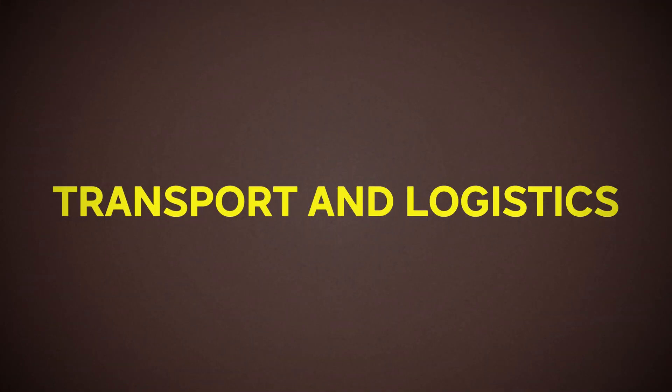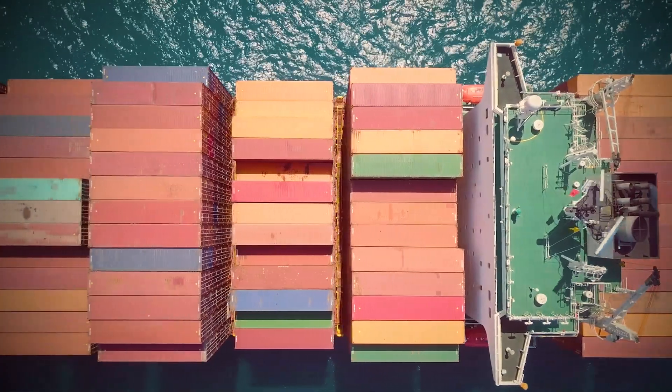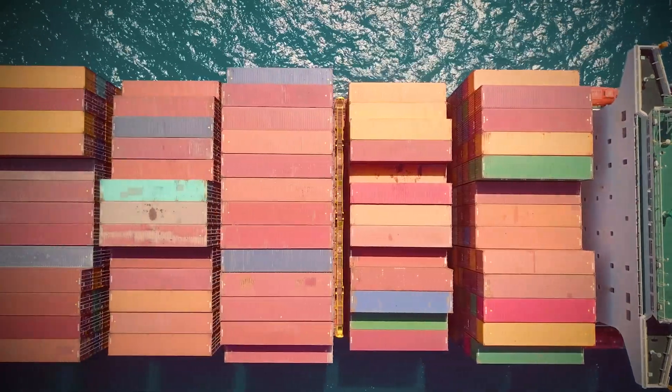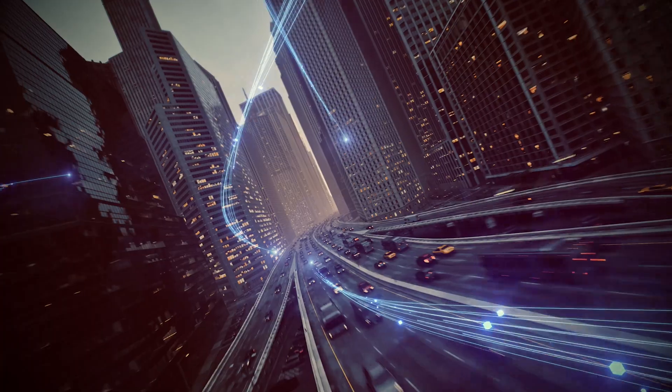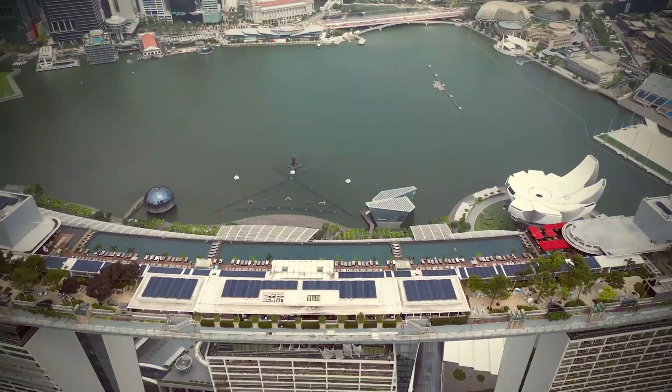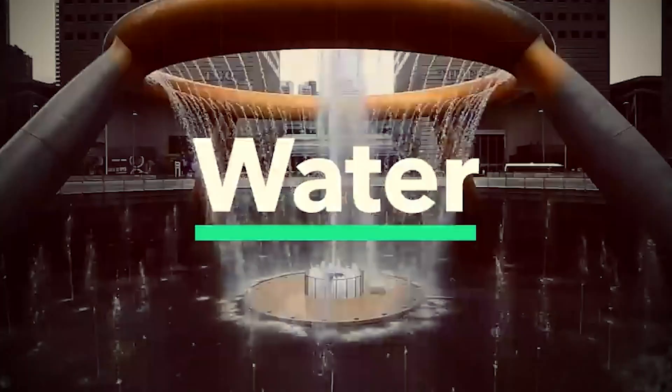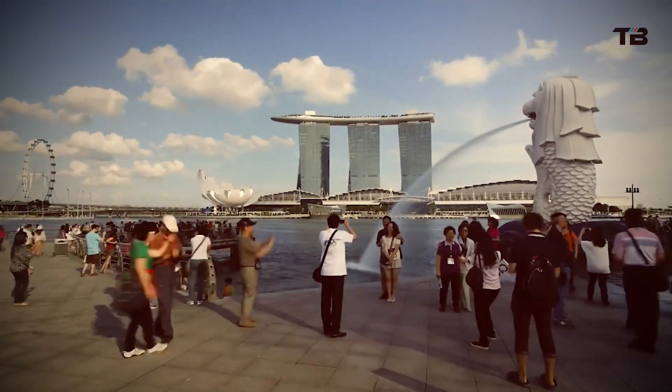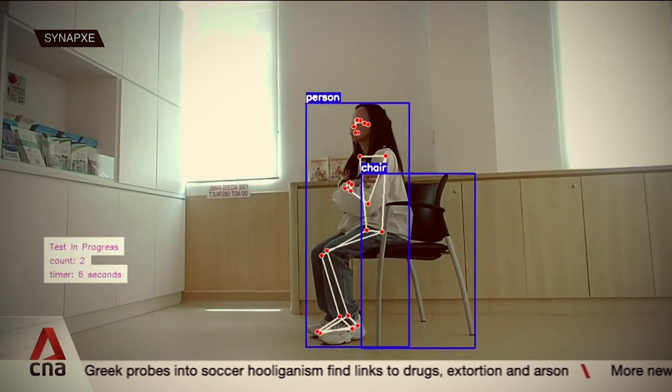First, transport and logistics. For a global shipping hub, this was a no-brainer. Think AI that optimizes every single shipping container's route around the globe, or intelligent traffic systems that make gridlock a thing of the past. Second, smart cities. AI is being used to make the city itself more efficient, managing energy and water usage with predictive models and even improving public safety. Third, healthcare. This is a big one. They're pushing for AI that can read medical scans more accurately than a human.